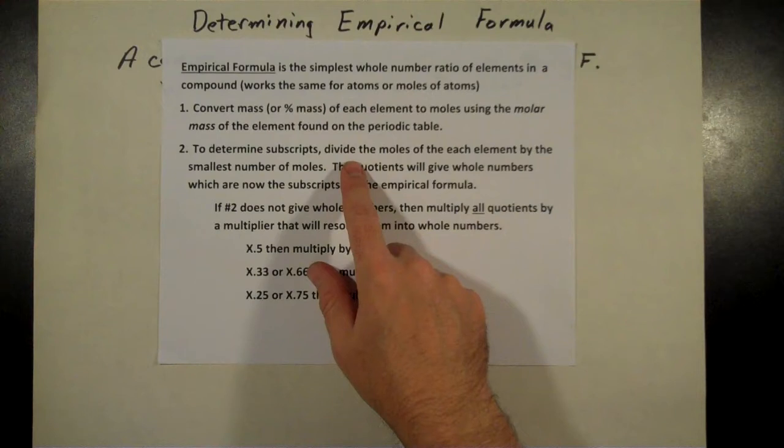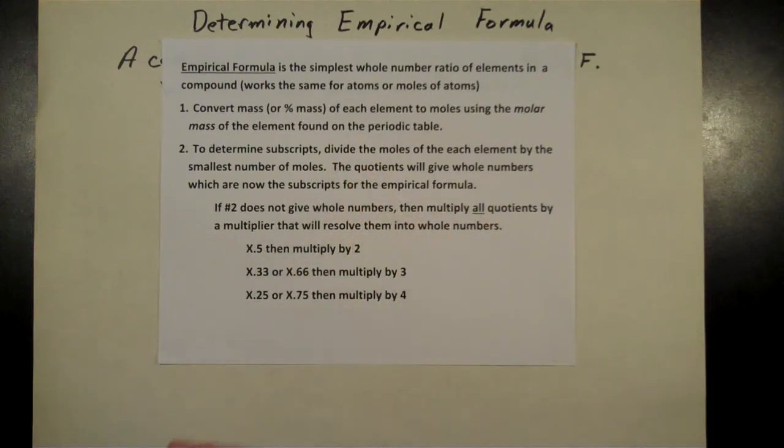To determine those subscripts, the next step's really easy. You're just going to divide everything, each of those mole amounts, by the smallest one. If you've got three or four values that you're looking at, find the one that's the smallest and then divide everything by that. That most of the time will give you whole numbers.